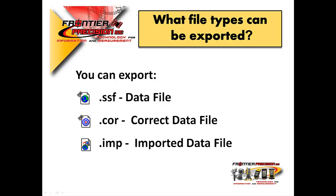Next are .cor files, or corrected data files. When you differentially correct a data file in GPS Pathfinder Office, the software will generate a corrected data file. Last, you can export imported files. These are data files with a .imp extension that were created using the Pathfinder import utility. These could have been created from an .mdb file, a .dxf, or even shapefile data.